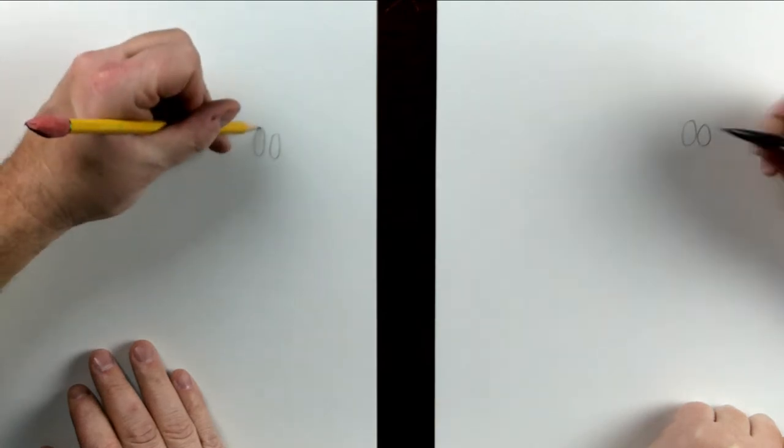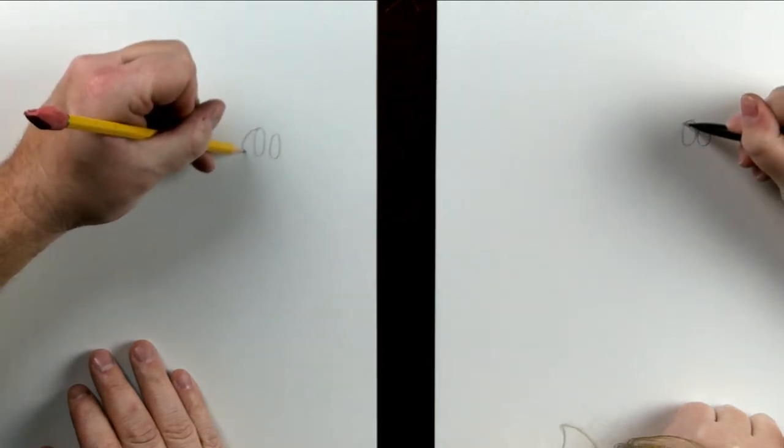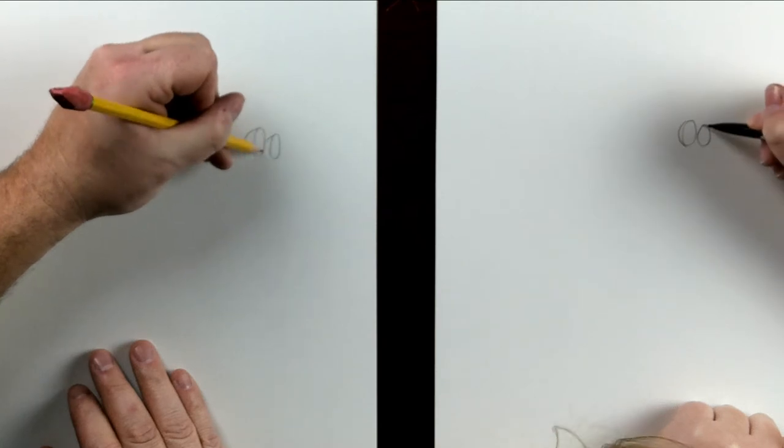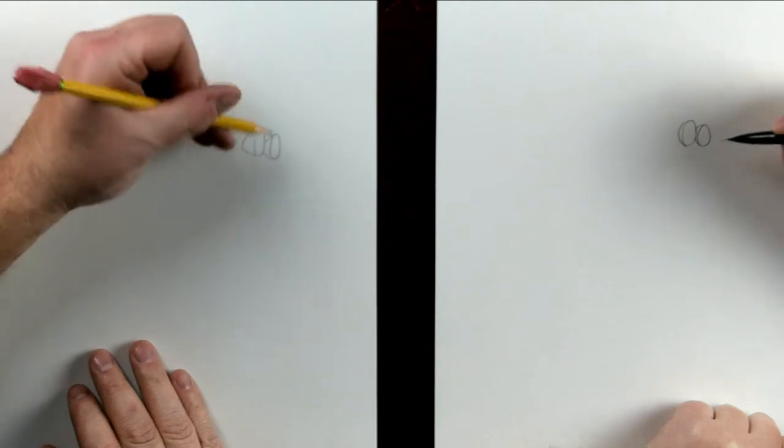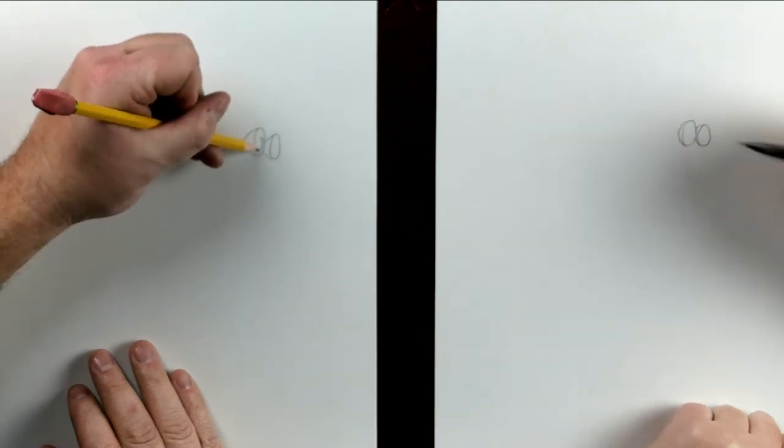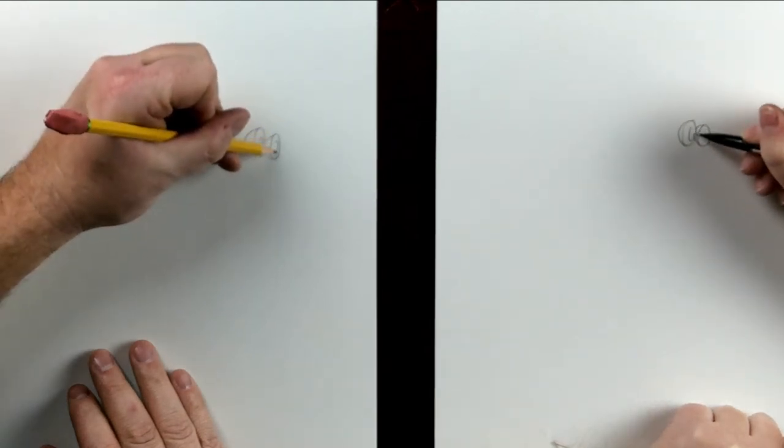And then we're going to have a semi-circle on the backside of each one. Then we're going to put an oval on the inside. These are the eyes.